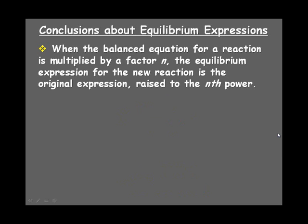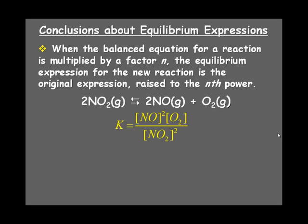Now, when the balanced equation for a reaction is multiplied by a factor, whatever that factor is, the equilibrium expression for the new reaction is raised to that factor power. This is why we've taught students to always balance equations in lowest terms because in equilibrium, those coefficients really do make a difference. So if this is our balanced equation again and there's our K expression,